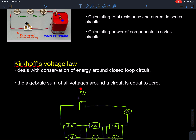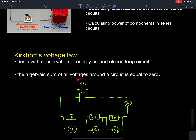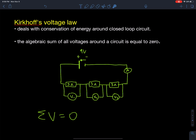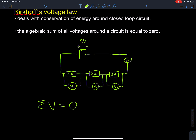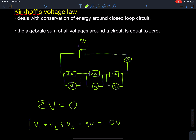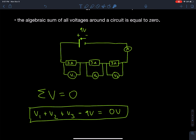The algebraic sum of all voltages around a circuit: the battery provides the total voltage, and each resistor will have a potential difference across it. The sum V1 + V2 + V3 must equal nine volts, or equivalently, nine volts minus V1 minus V2 minus V3 equals zero. That's essentially what Kirchhoff's law states, which we rearrange to: V1 + V2 + V3 = 9 volts.